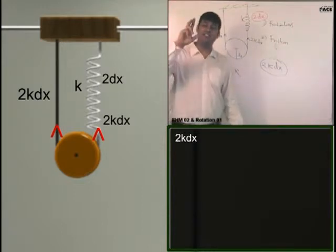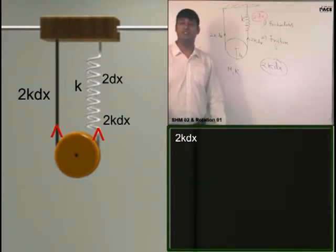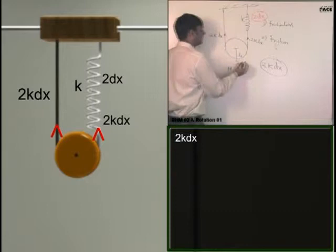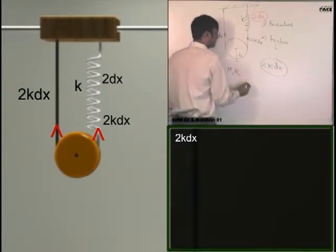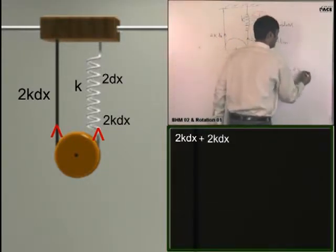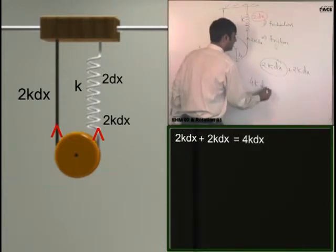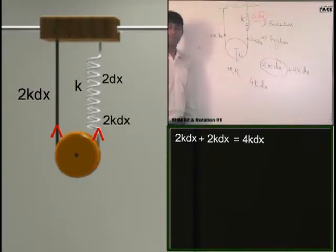So I will say that the initial extension in the spring and the Mg they were balanced. So we will neglect both of them and we will just consider the dx part. So this external unbalanced upward force will be how much? Tell me fast. 4k dx. Exactly. So it will be 4k dx. This will be the net upward unbalanced force. Do I need to take Mg? No sir.